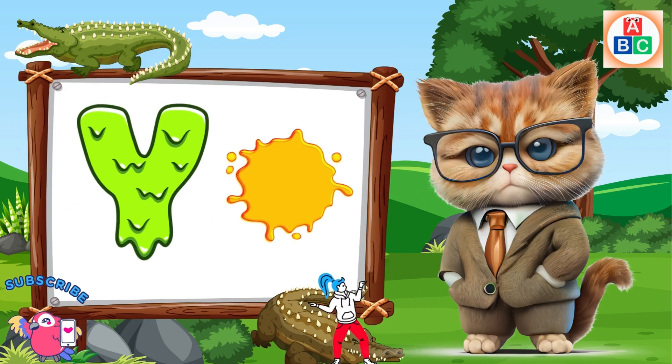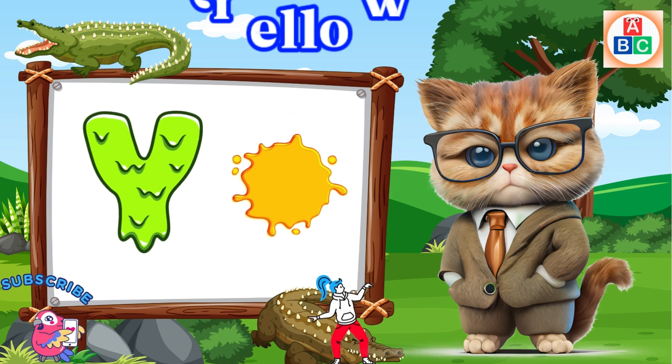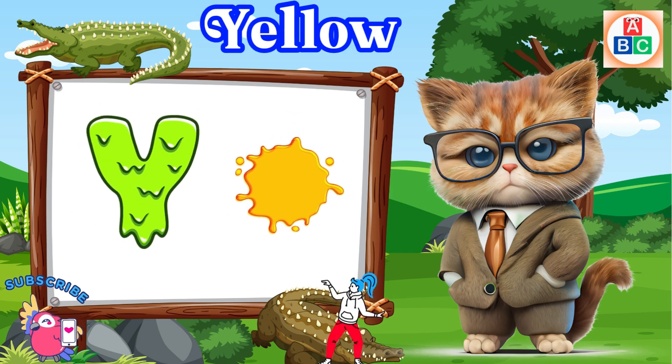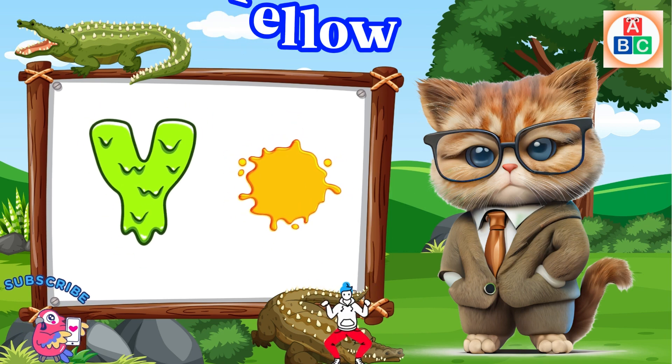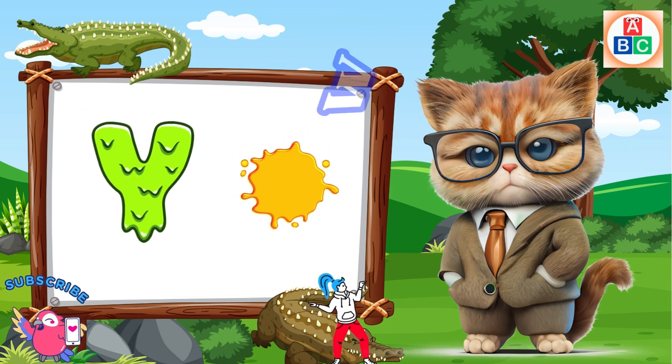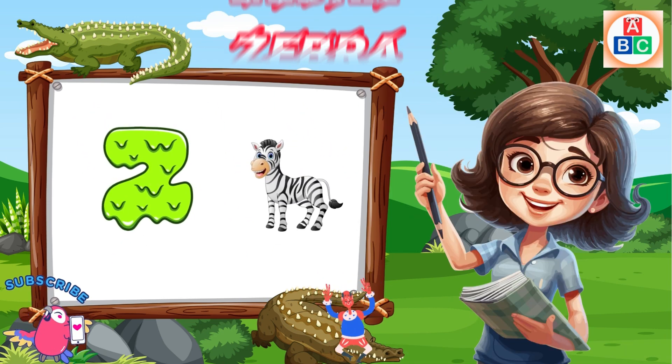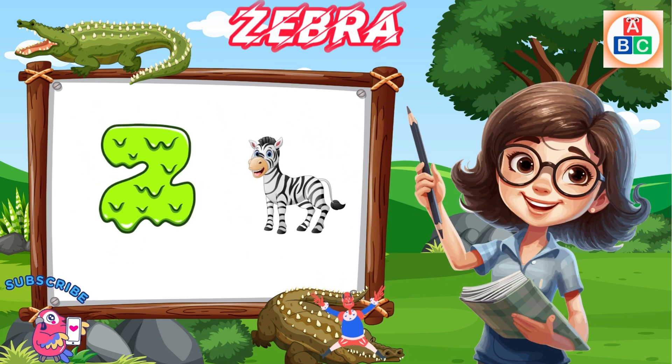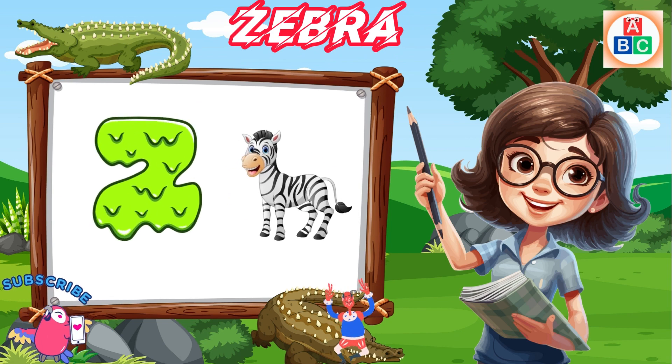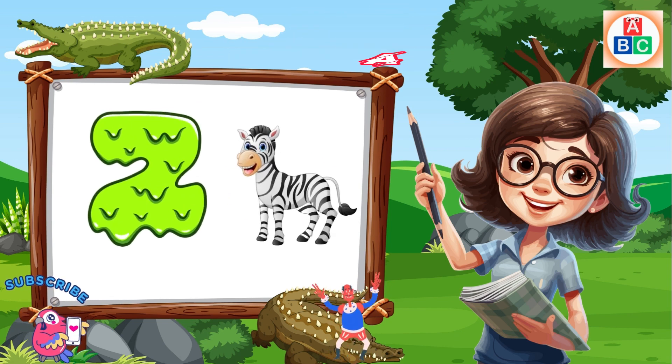Y is for yellow, y-y-yellow. Z is for zebra, z-z-zebra.